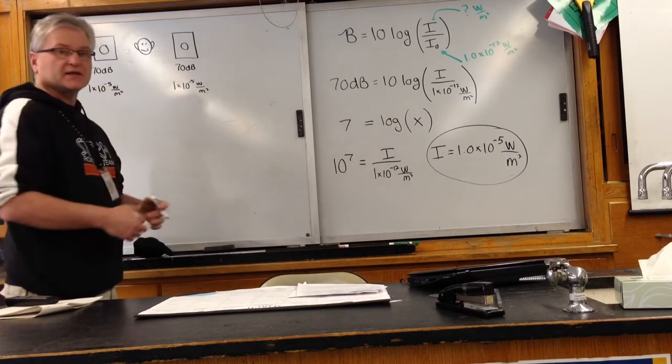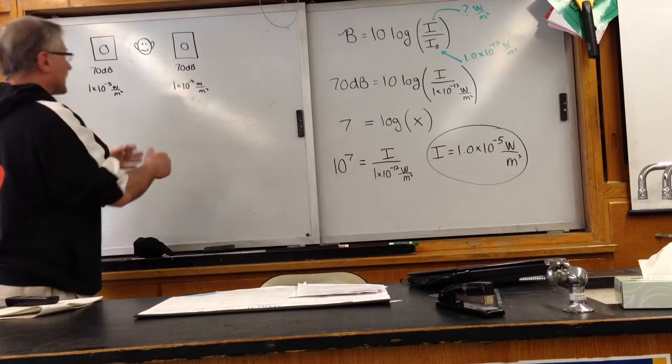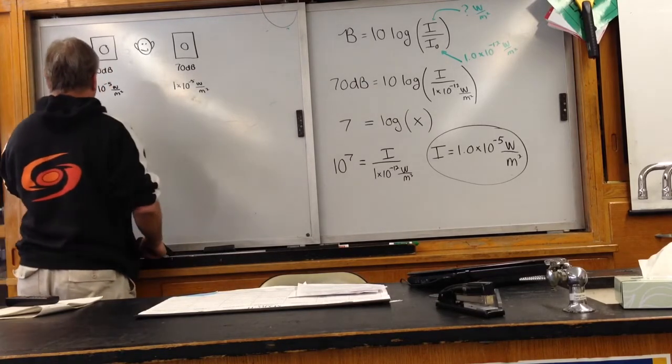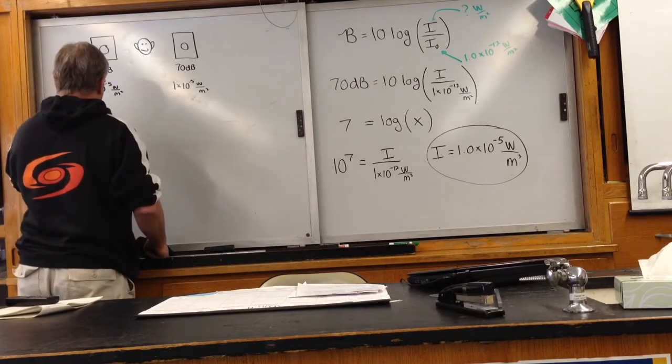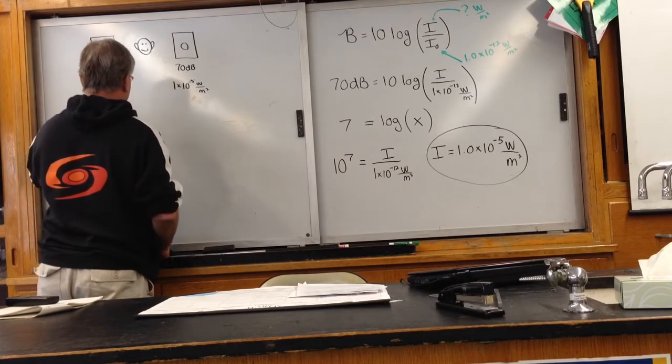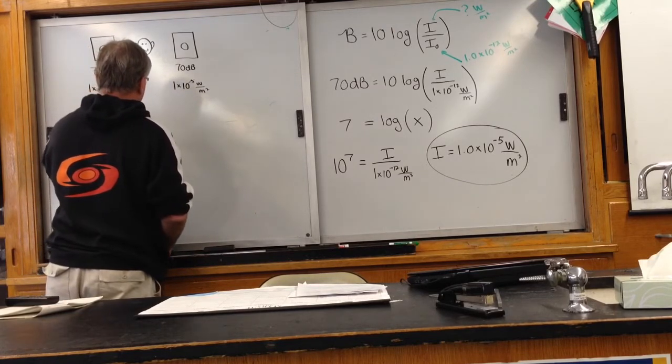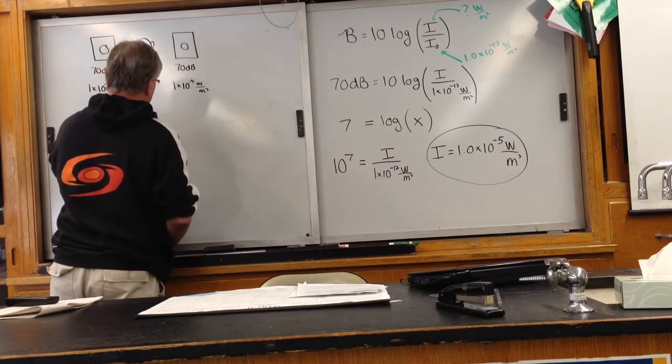Now, if I take these non-log values, I can actually add them. So the total intensity is going to be the sum of those, so it's going to be 2 times 1 times 10 to the minus 5 watts per meter squared.